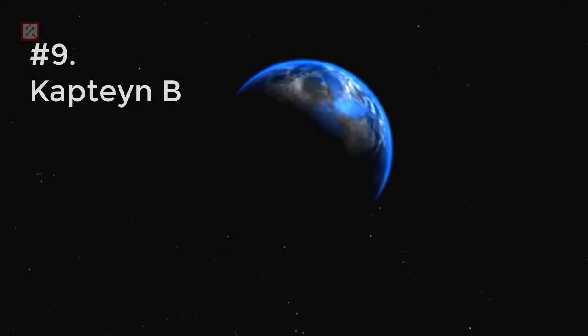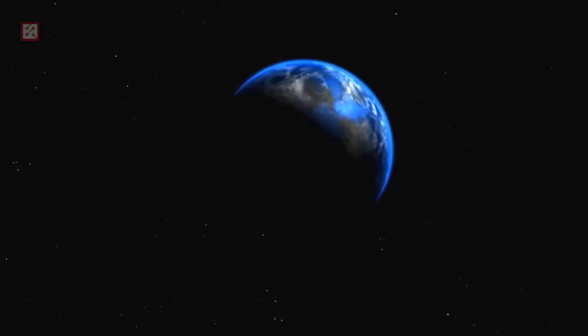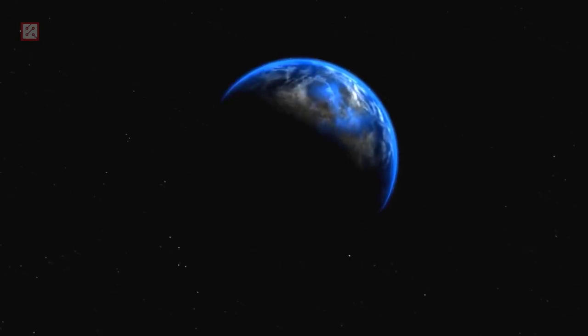Number 9: CAPTAIN B. CAPTAIN B is an exoplanet that orbits within the habitable zone of the red subdwarf CAPTAIN star, located approximately 12.8 light-years from Earth. CAPTAIN B is a super-Earth, a planet that has a radius and mass bigger than that of Earth.